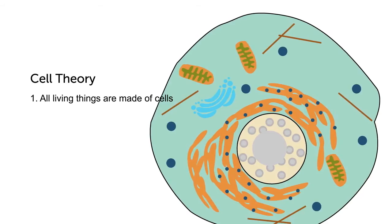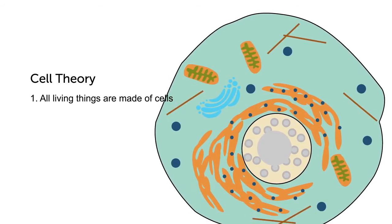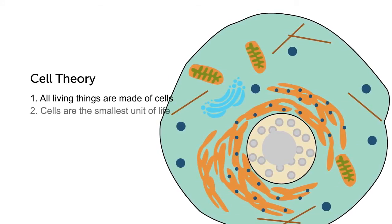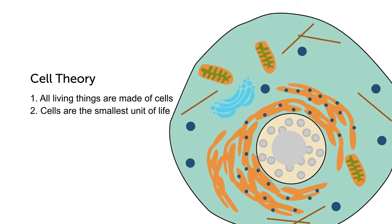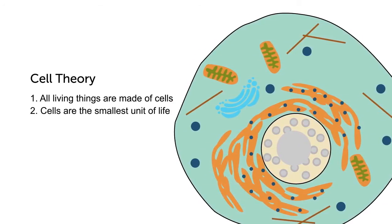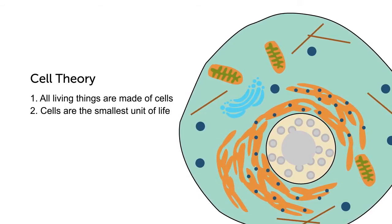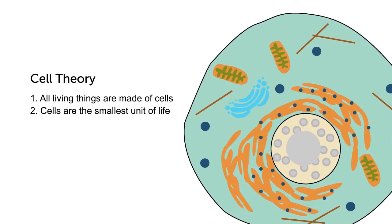All living things are completely made up of tiny cells. 2. Cells are the smallest component of living things. The smallest unit of life is the cell. The smallest a living thing can ever be is one individual cell.